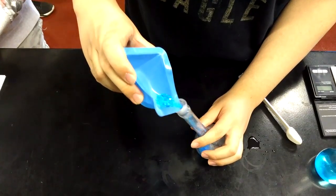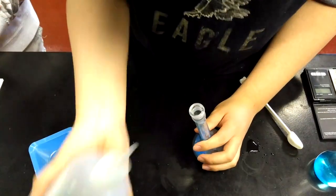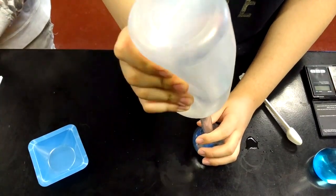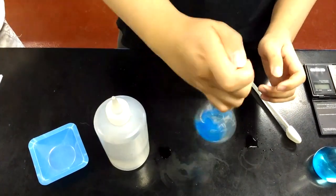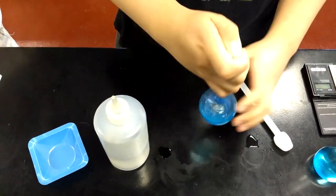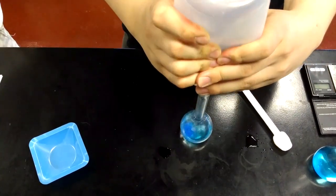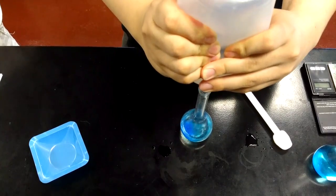Add the copper 2 sulfate to the volumetric flask. Pour some water into the flask and dissolve. Fill the rest of the flask up to the line with water.